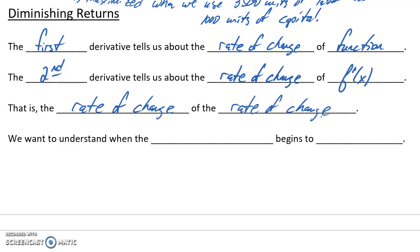That can be a confusing idea when we first introduce it, but essentially what we want to do with this idea of diminishing returns is understand when the rate of change of our function begins to slow down.